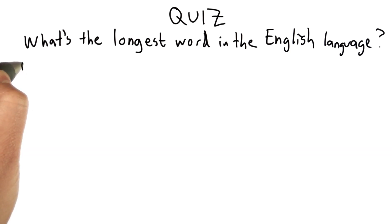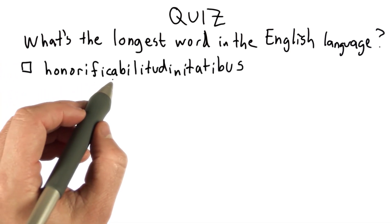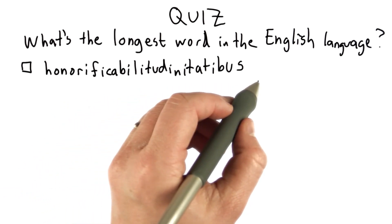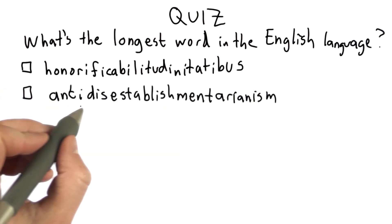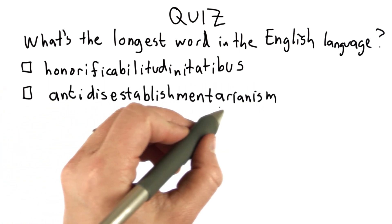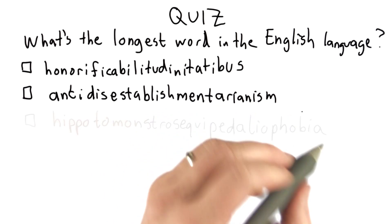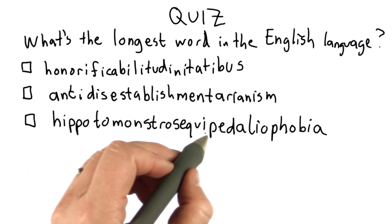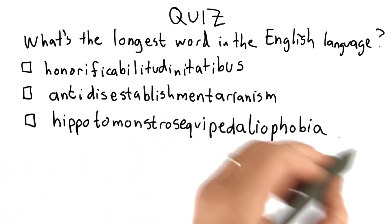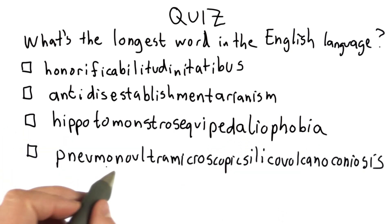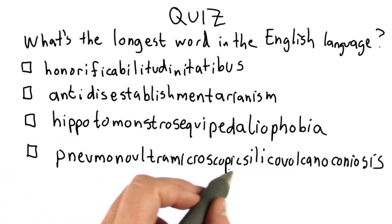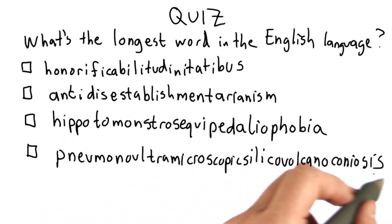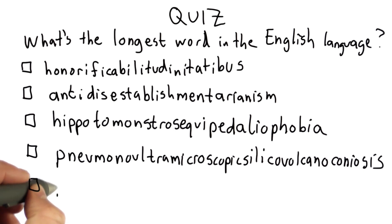And here are the choices. Honorificabilitudinitabinitis. Anti-disestablishmentarianism. Hippotomostrocyquipedalaphobia. Pneumonialocotromomicroscopulavolcanoodinitis. Or none of the above.